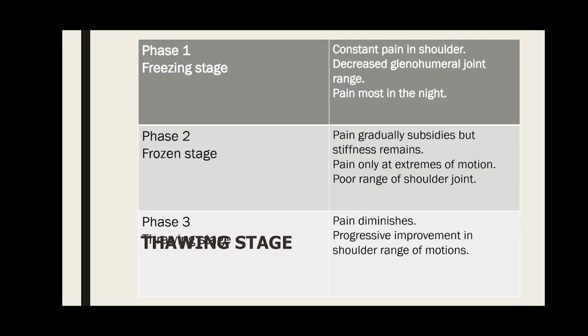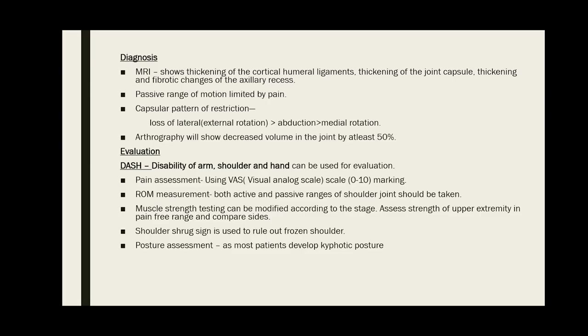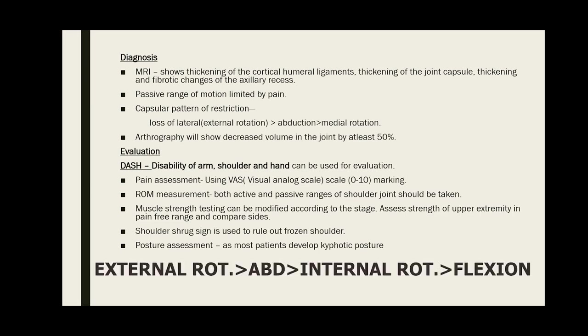In diagnosis, there's an important point to note: in adhesive capsulitis, both active and passive range of motions are limited. In impingement or posterior dislocation of the shoulder joint, there is restriction in active motion but passive motion can be done. But in adhesive capsulitis, there is restriction of passive motion also. The capsular pattern shows greatest restriction in external rotation, then abduction, then lateral rotation, but overall there is restriction in all shoulder movements.